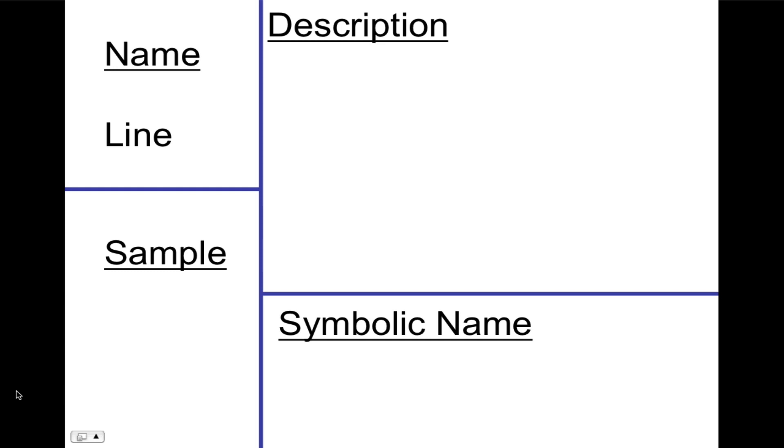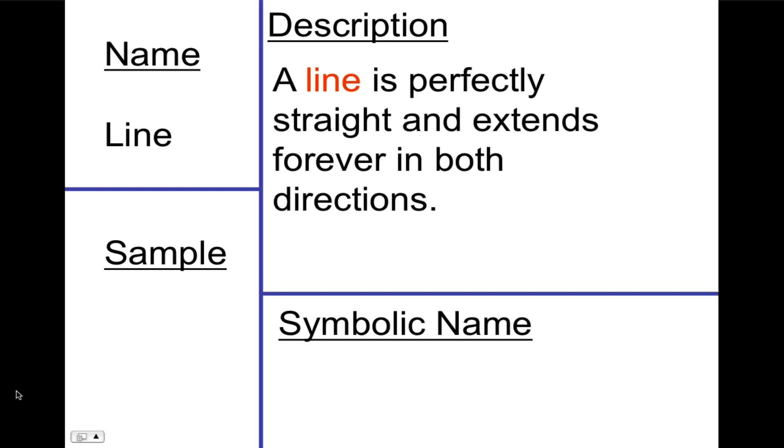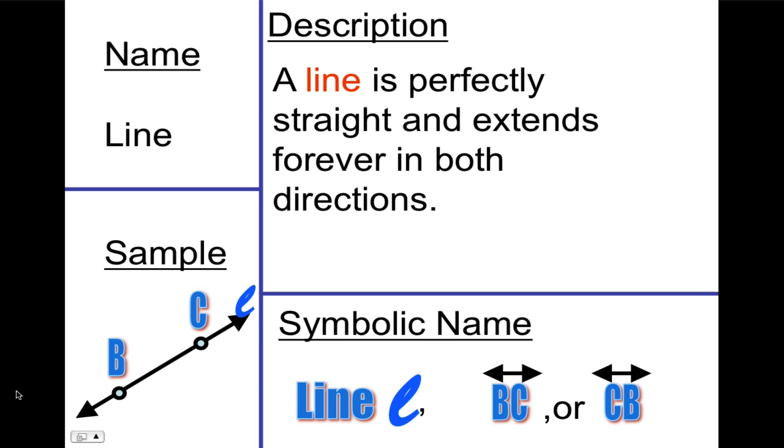Next is line. A line is perfectly straight and extends forever in both directions. So a line is a one dimensional object. It has only length. It has no width or height. So a point has zero dimensions and a line has one dimension. We can draw a line and name it either using two points that are on the line. Any two points can name the line. Or we can name it with a single cursive letter. So this line could be called line L. Or it could be named using the two points BC or CB. Because a line goes in both directions, it doesn't matter which point you name first.